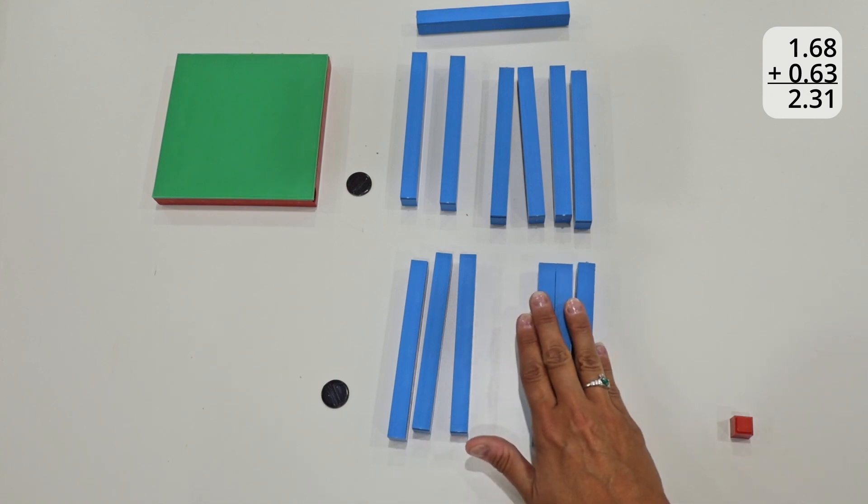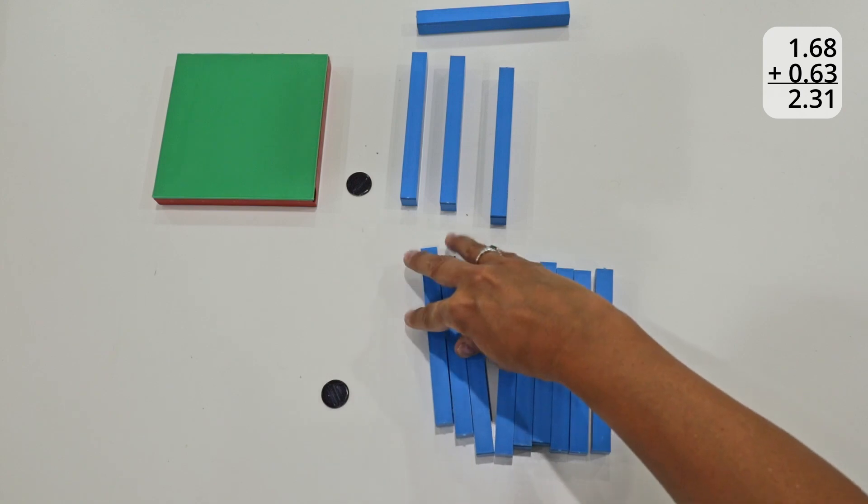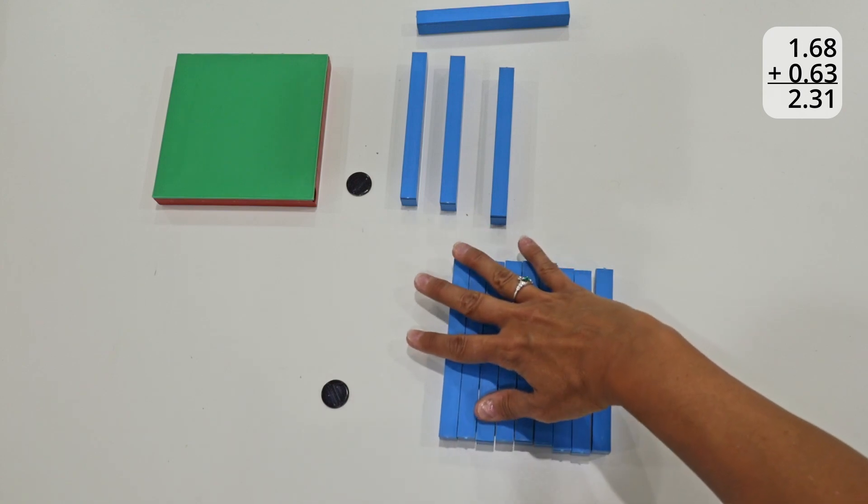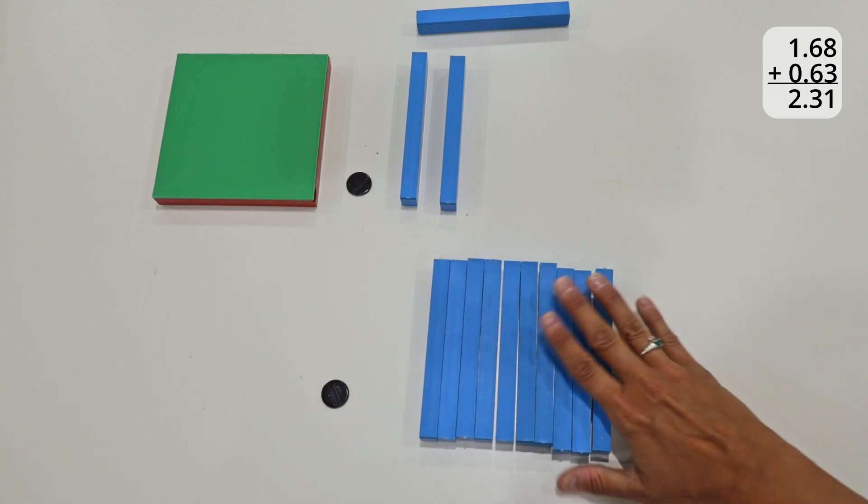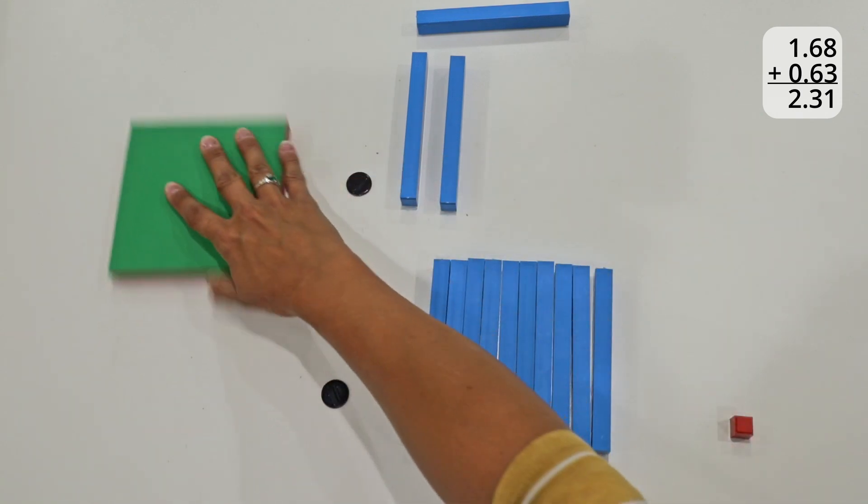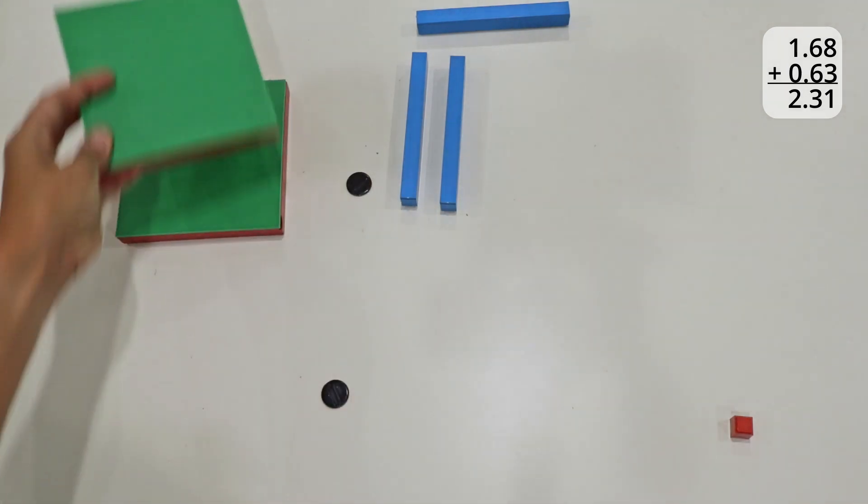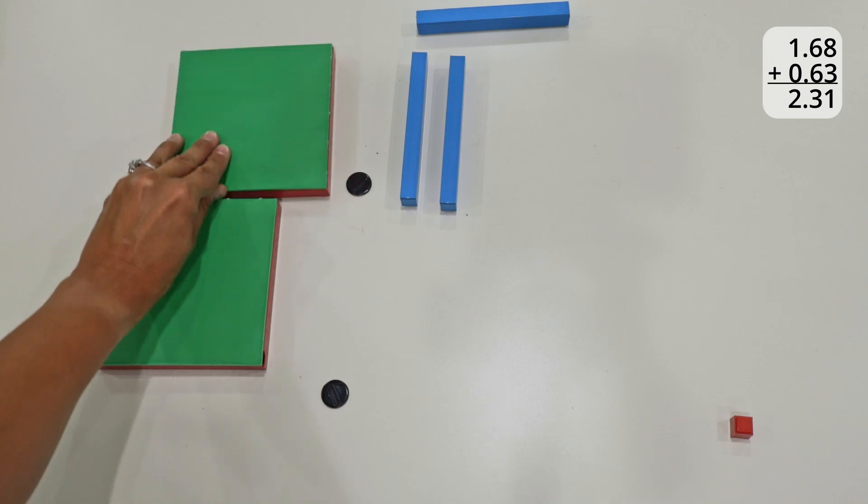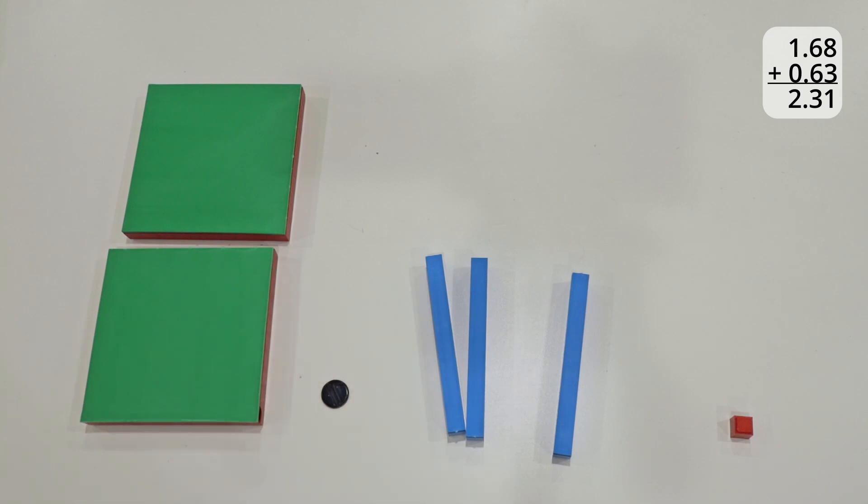So now in this tenth column, I'm going to have my student put together ten of these blocks. They know that it takes ten of these to create one of these wholes. So ten of these tenths equal one of these. They can see and compare the size. So we're going to get rid of these ten and move them off to the side, moving this one into this column. And so now they can take it and put it all together and see that those two numbers added together will equal two and thirty-one hundredths or two dollars and thirty-one cents.